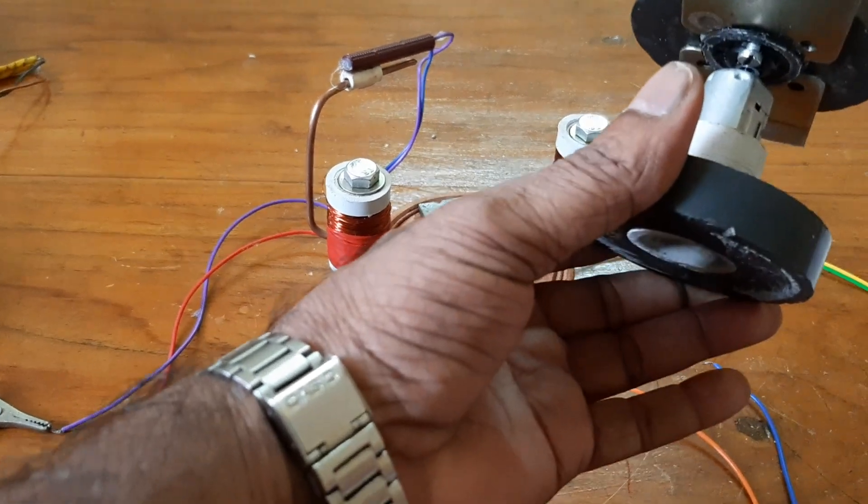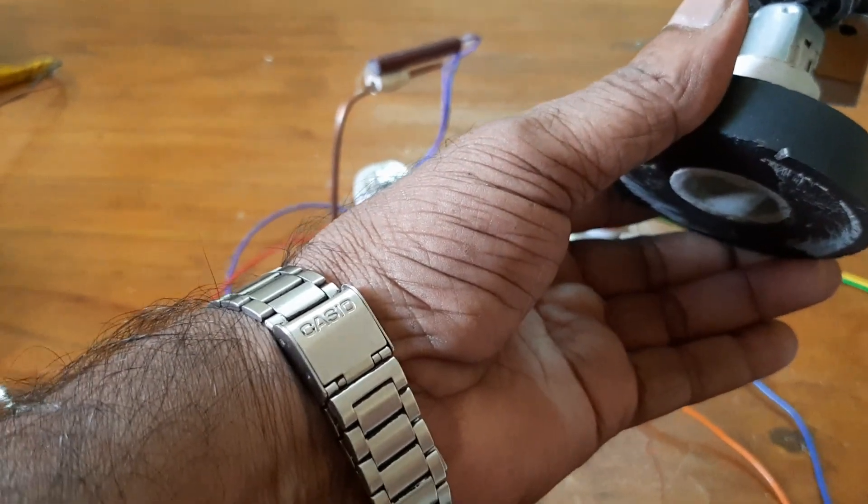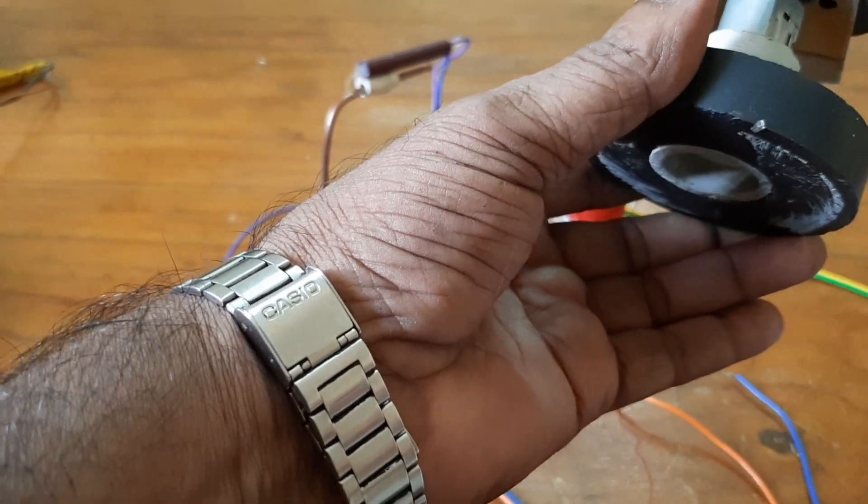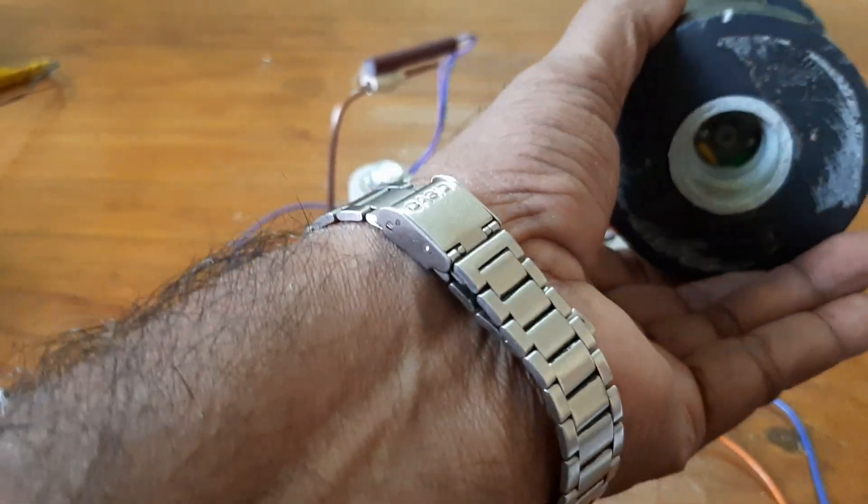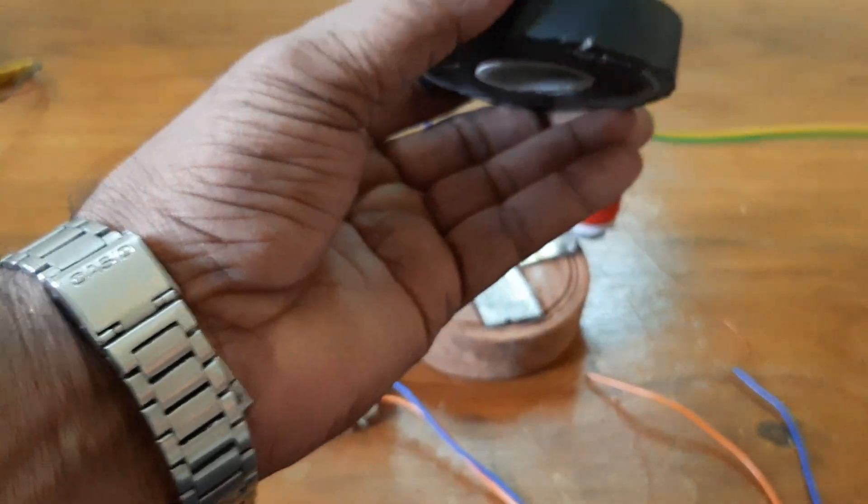This is the generator. Here it is a DC motor useful for a generator. The generator supply is taken out.